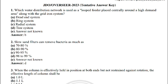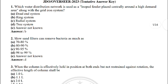The first question: which water distribution network is used to looped feeder placed centrally around the high demand area along with the grid ion system? The answer is ring system. Next: flows and filters can remove bacteria. The correct answer is 98 to 99 percentage.